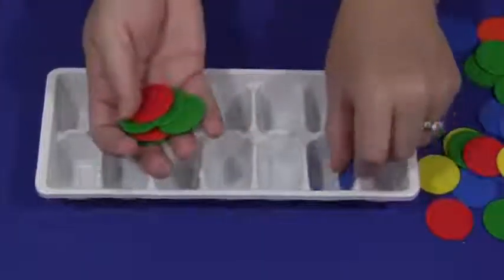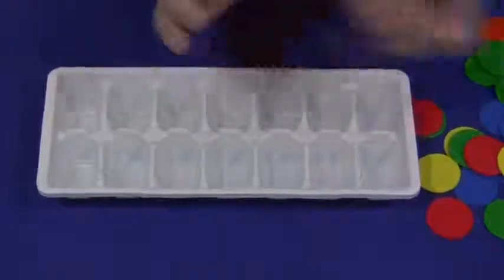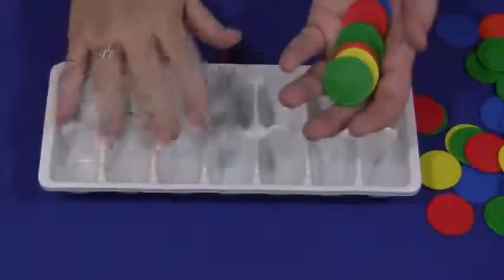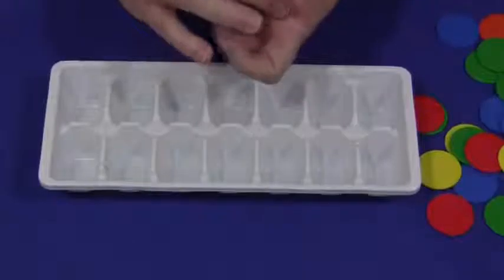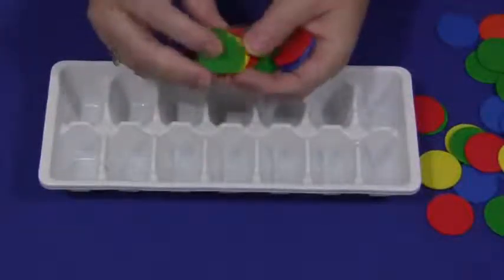But if you don't have these in your early learning environment, you can use counting bears, you can use buttons, but you do want to watch the size of the items that you're going to be using. If you have children three or under or children who are still in the stages of putting items in their mouth, you want to use close supervision with this activity.